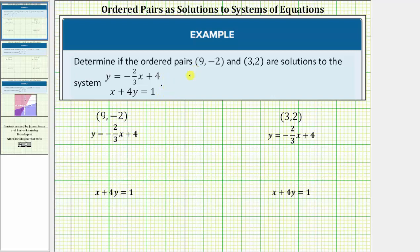To see if the ordered pair 9 comma negative 2 is a solution to the system, we'll substitute 9 for x and negative 2 for y into both equations and see if it satisfies both. Using the equation y equals negative 2/3 x plus 4, we'll perform the substitution, giving us negative 2 equals negative 2/3 times 9 plus 4. Now we'll simplify the right side. Let's write 9 as a fraction with a denominator of 1.